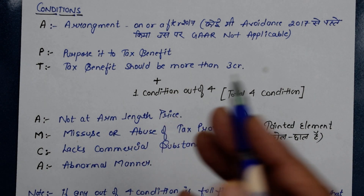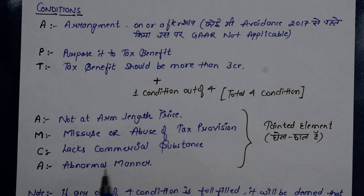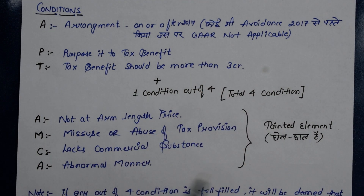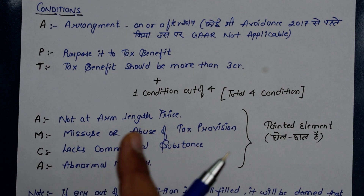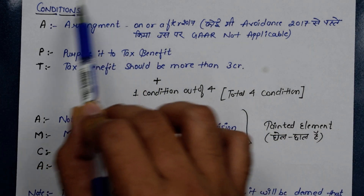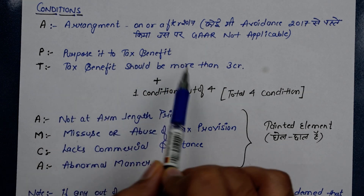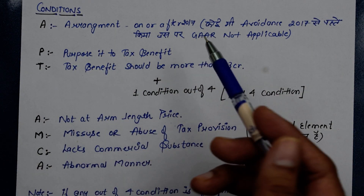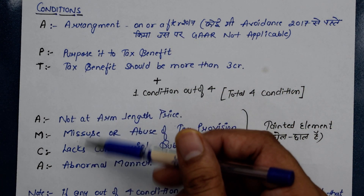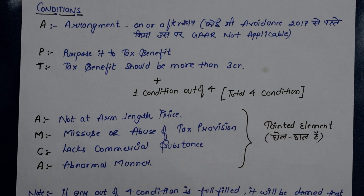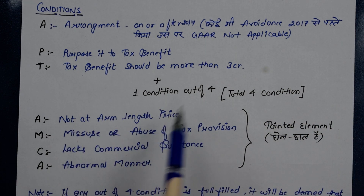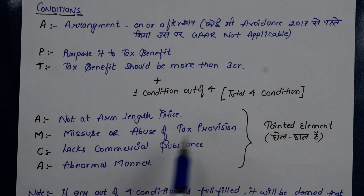So if the tax amount involved is 3 crore or more, the arrangement can attract GAAR. Along with the tax benefit condition, the arrangement must also satisfy at least one of the following conditions: there must be misuse or abuse of tax provisions, there must be a lack of commercial substance, or the transaction must have been carried out in an abnormal manner. If any one of these impermissible elements is present, then a tentative element is established.